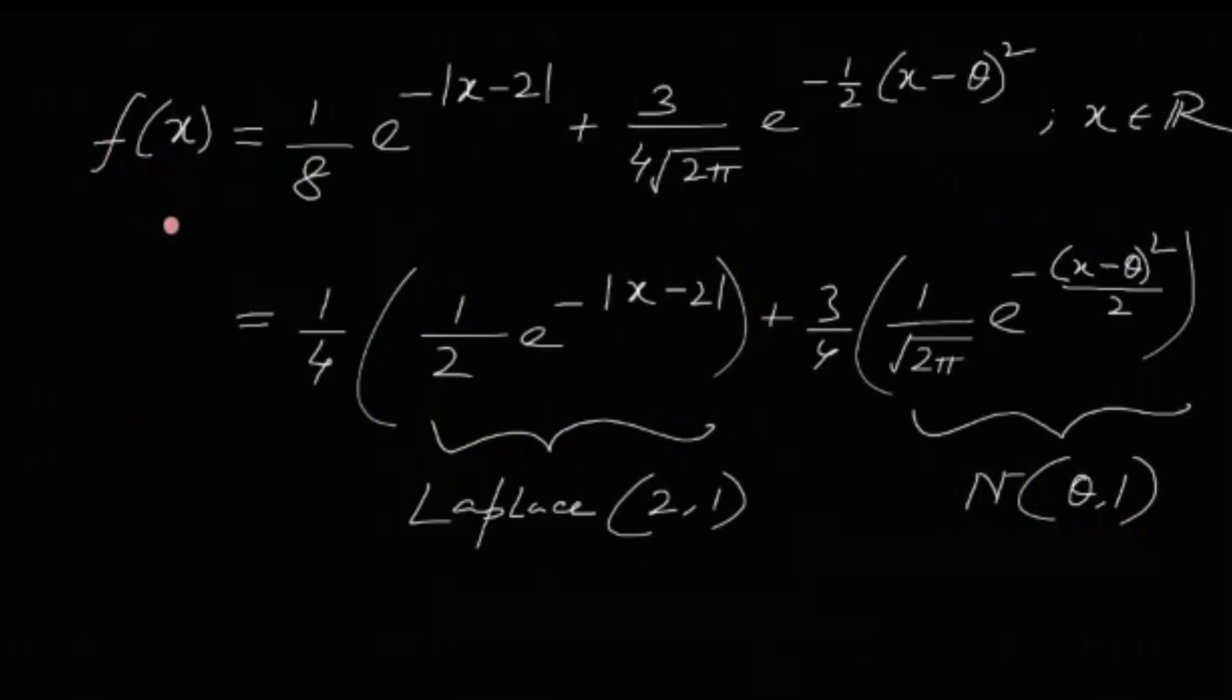For the method of moments all you need to do is calculate the population moments and the sample moments and equate them for finding the estimate. Now the expectation of X is nothing but integral x f(x) dx.